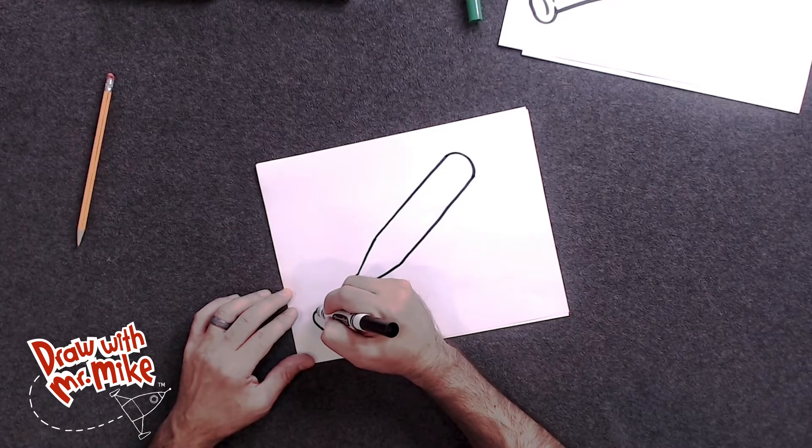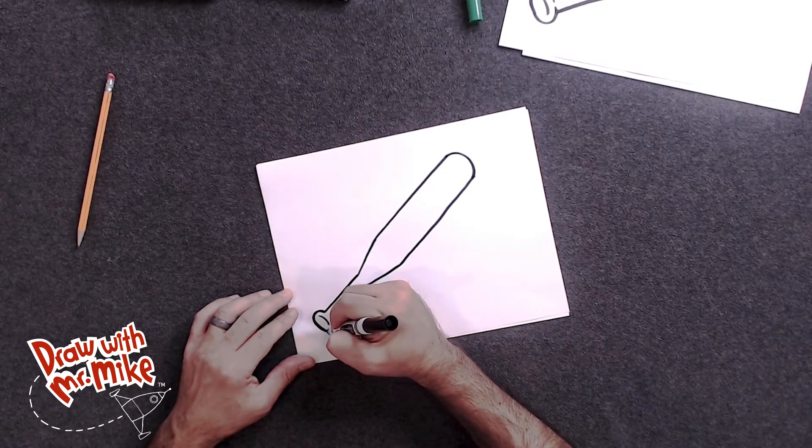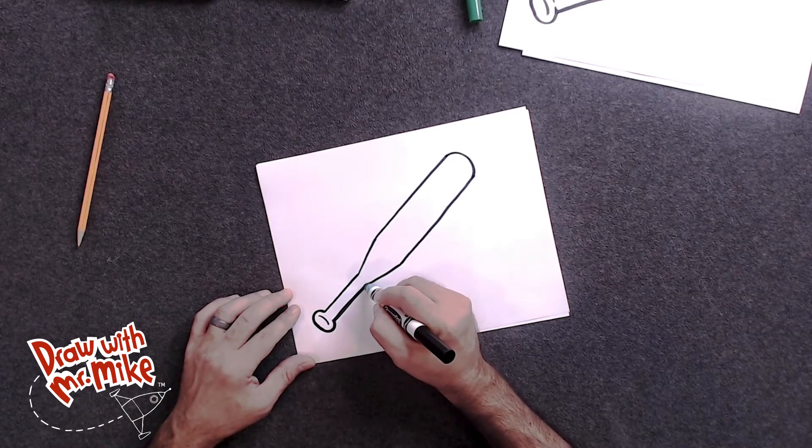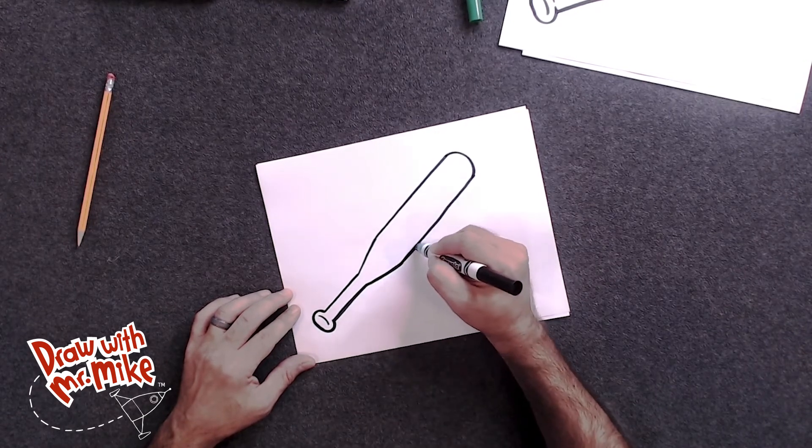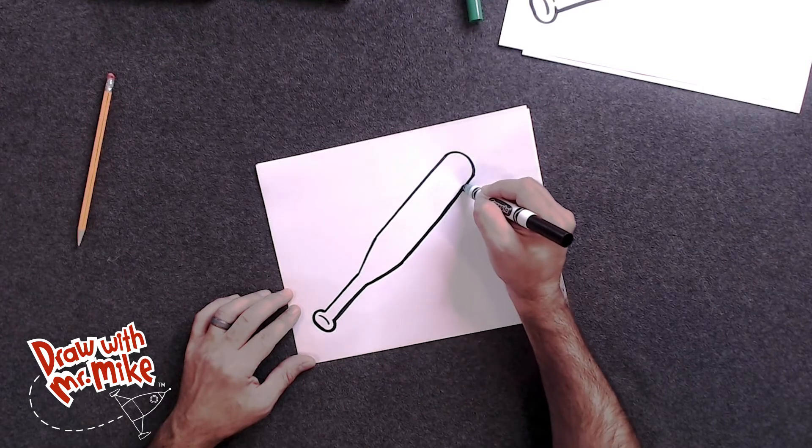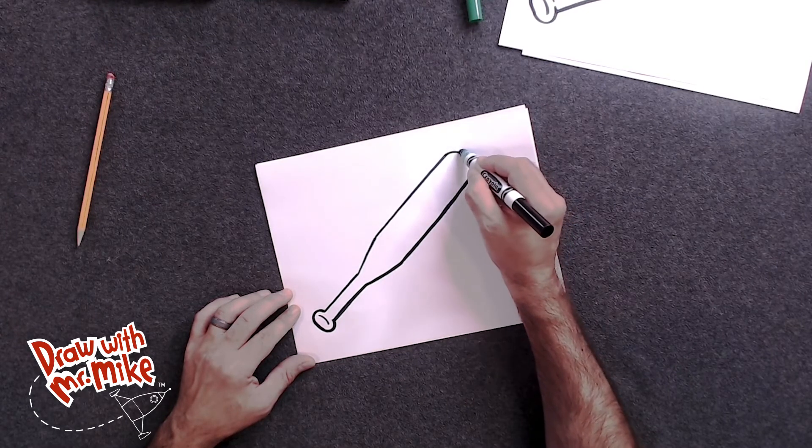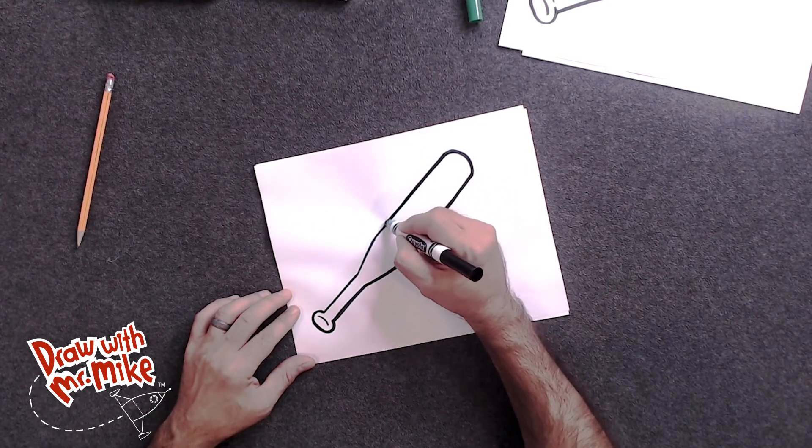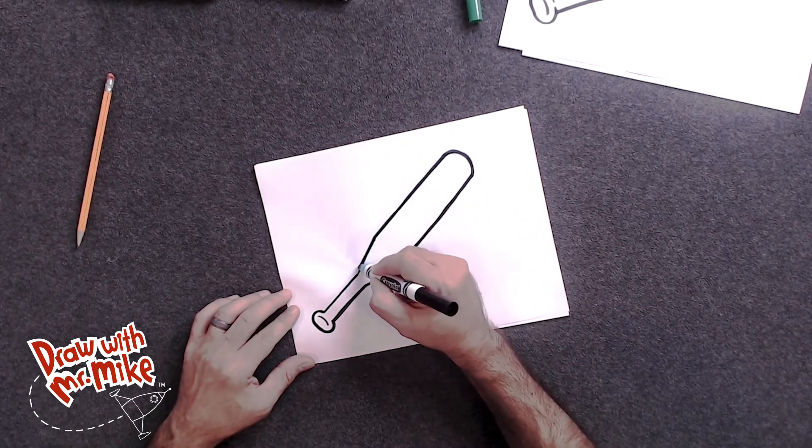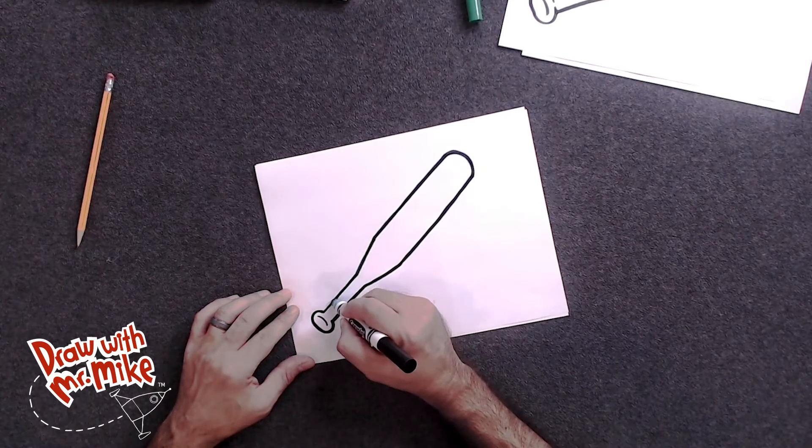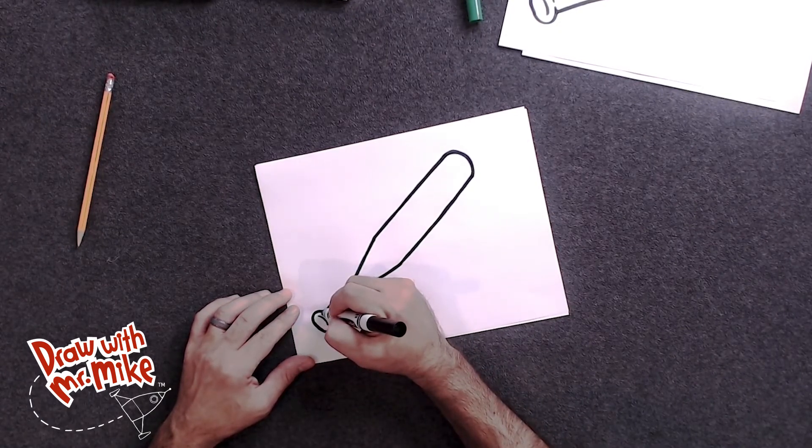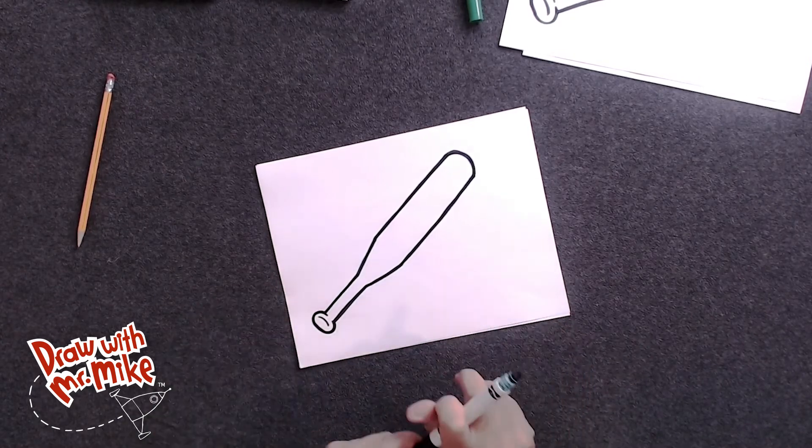So I'm gonna start here, and make a thick line that comes around, and then we'll continue that all the way around the drawing, just like that. And if you want, you can have your arc on this side. You can have it go in just a little bit, just like that.